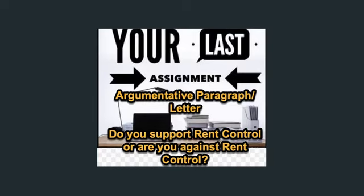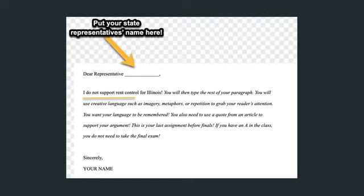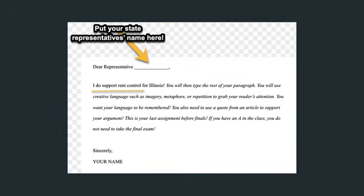If you don't do it, it's going to hurt your grade, so really make sure you get this done. It's our very last assignment before the final exam. If you have an A, you are exempt from the final — if I didn't tell you that before, now you know. So your last assignment is going to look like this: this week, just bullet points; next week, you'll write it, starting with your state representative's name — 'Dear Representative Theresa Ma' or whoever it is — and then stating 'I do not support rent control for Illinois' or that you do support it.